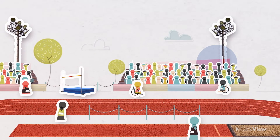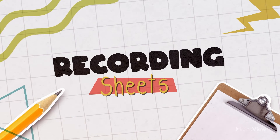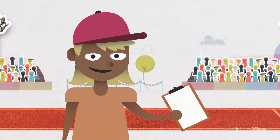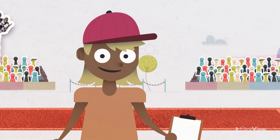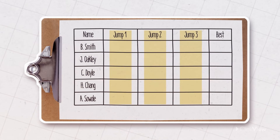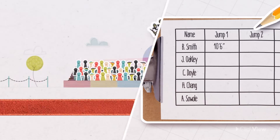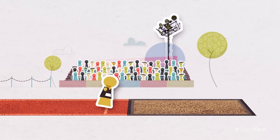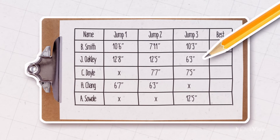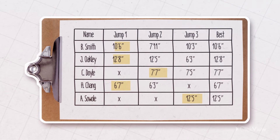Now that everybody's here, it's time to start. I'm heading over to the track. I'm recording the data from the long jump competition. I'm going to use a recording sheet, which is a template in which I can write down the data as I collect it. My recording sheet has each competitor's name in the first column, and space in the next three columns to record how far they jump in each of their attempts. If they step over the line, I put an X into the box instead of recording the distance. When the competition's over, I can find the longest distance jumped by each competitor and write it in the final column. Then I can work out who the winner is.